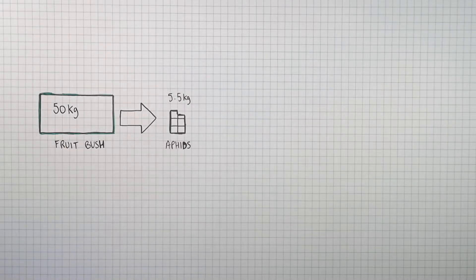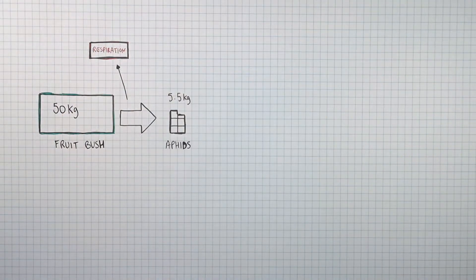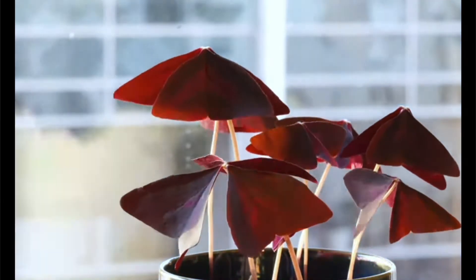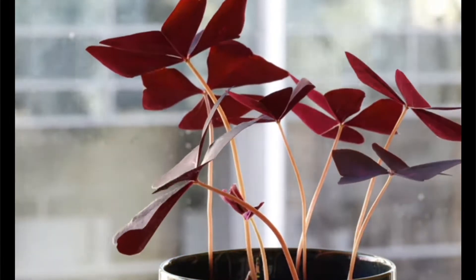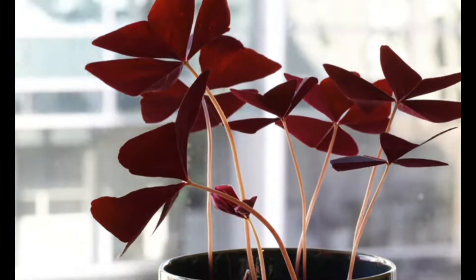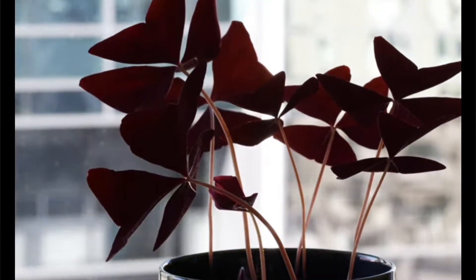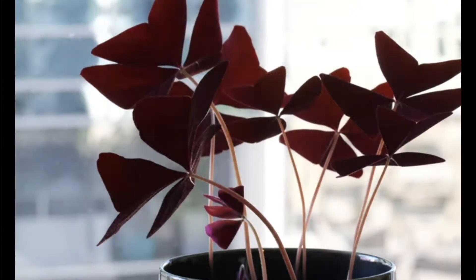When an organism is active, it undergoes cellular respiration, and energy from cellular respiration is transferred by heating to the surroundings. Even plants move — energy is being used during respiration to provide energy for movement. This energy is not being transferred to the next trophic level.